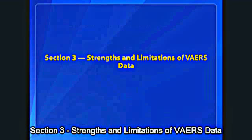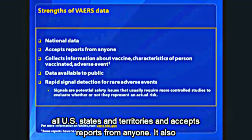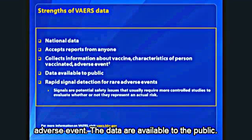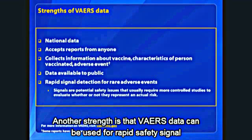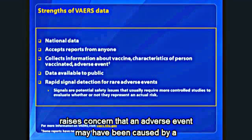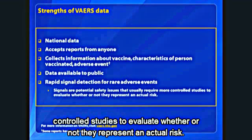Section 3: Strengths and Limitations of VAERS Data. VAERS data have several strengths. VAERS collects national data from all U.S. states and territories and accepts reports from anyone. It also collects information about the vaccine, the person vaccinated, and the adverse event. The data are available to the public. Another strength is that VAERS data can be used for rapid safety signal detection for rare adverse events. A signal is when reported information raises concern that an adverse event may have been caused by a vaccine. Signals are potential safety issues that usually require more controlled studies to evaluate whether or not they represent an actual risk.